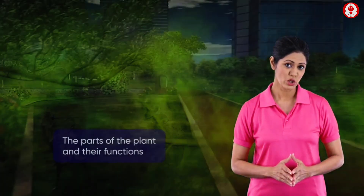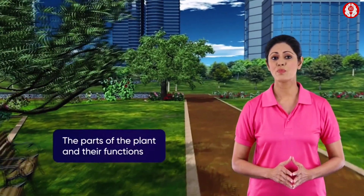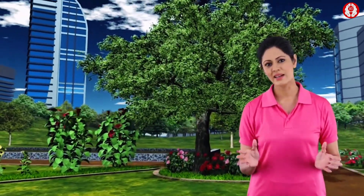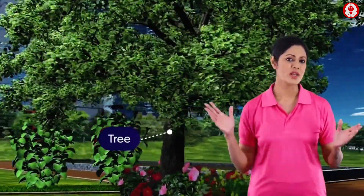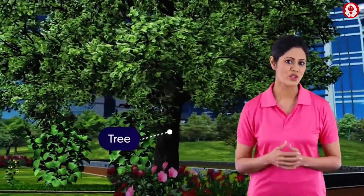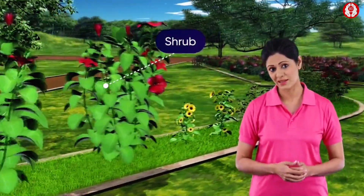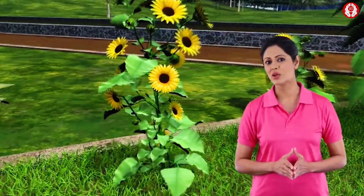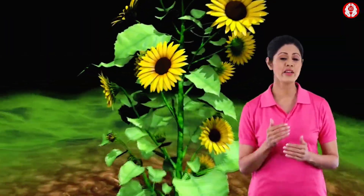Our objective is to learn about parts of the plant and their functions. In a garden we observe different kinds of plants around us — we see some big trees with thick woody trunks, some bushy plants which are known as shrubs, and also some small delicate plants called herbs.